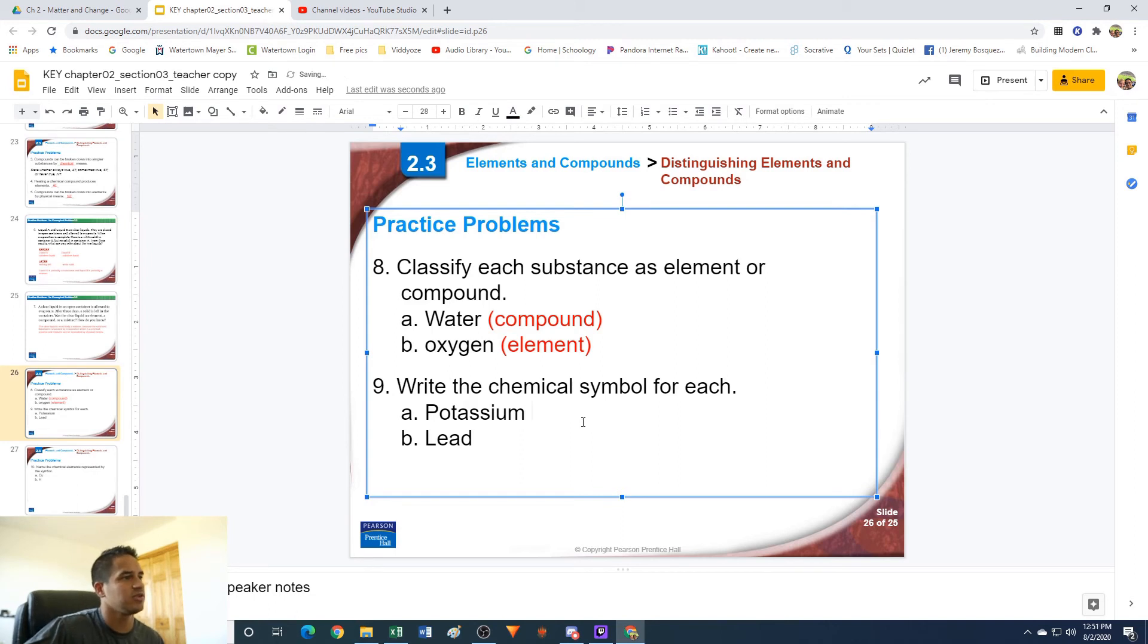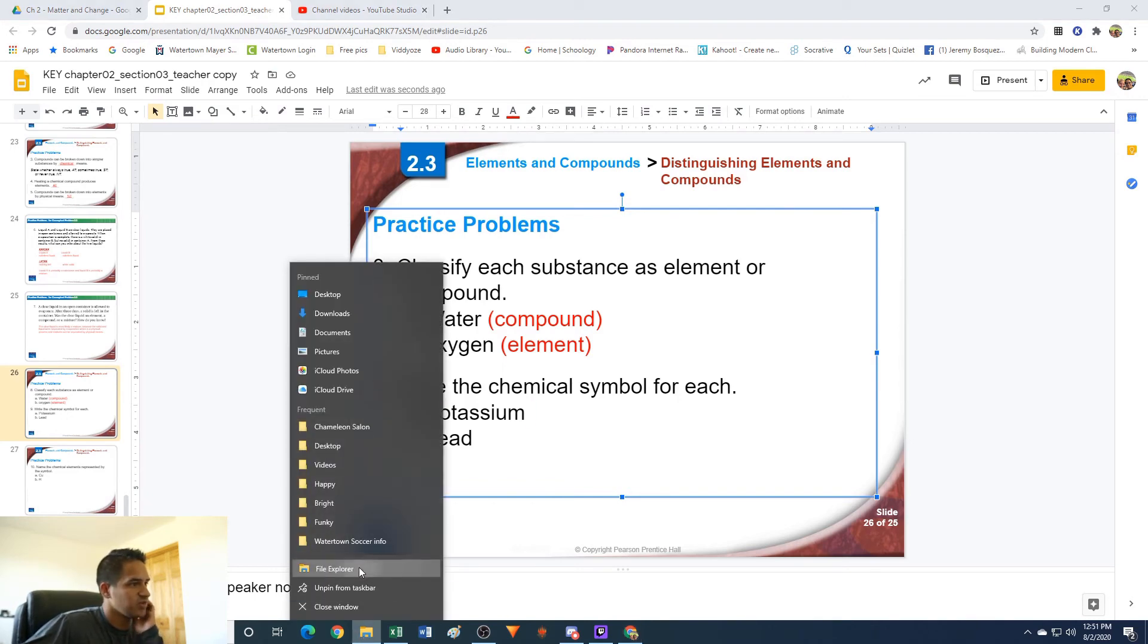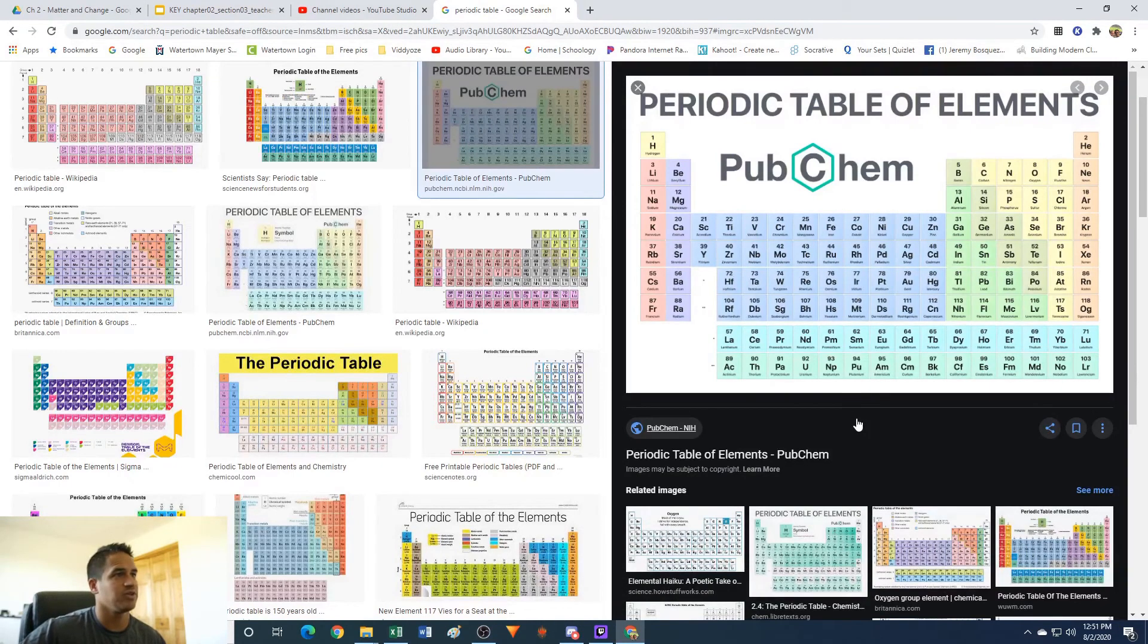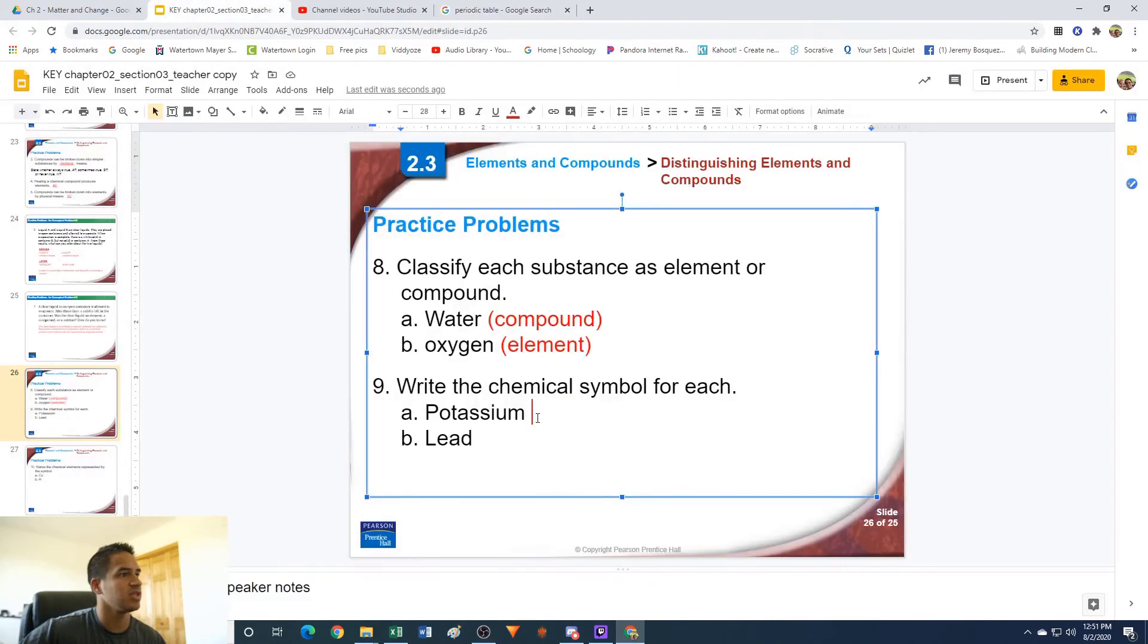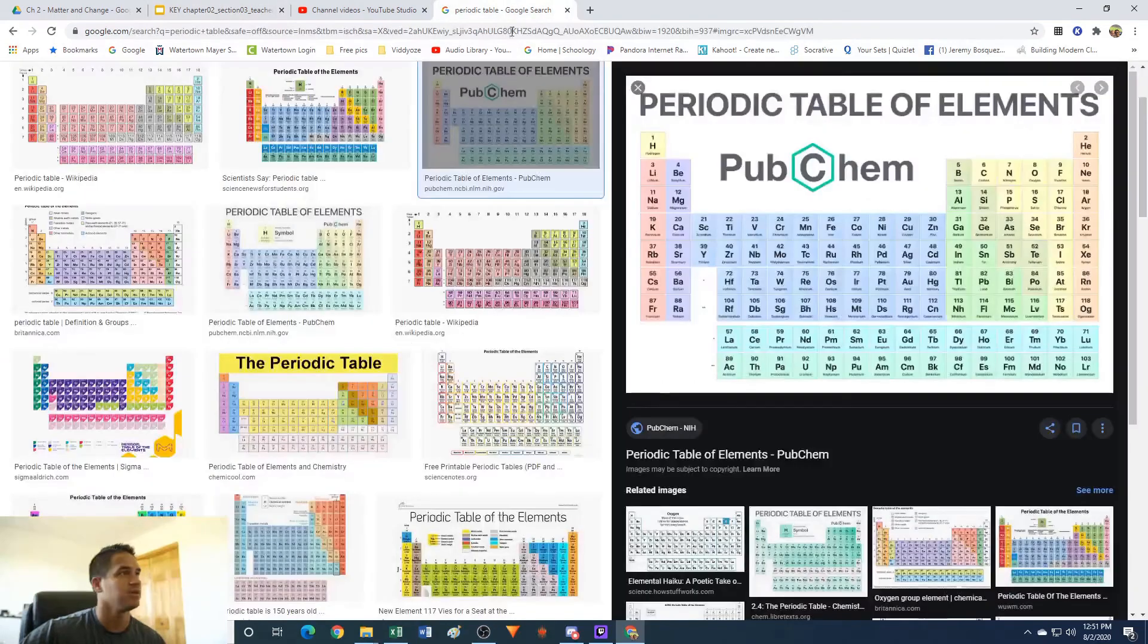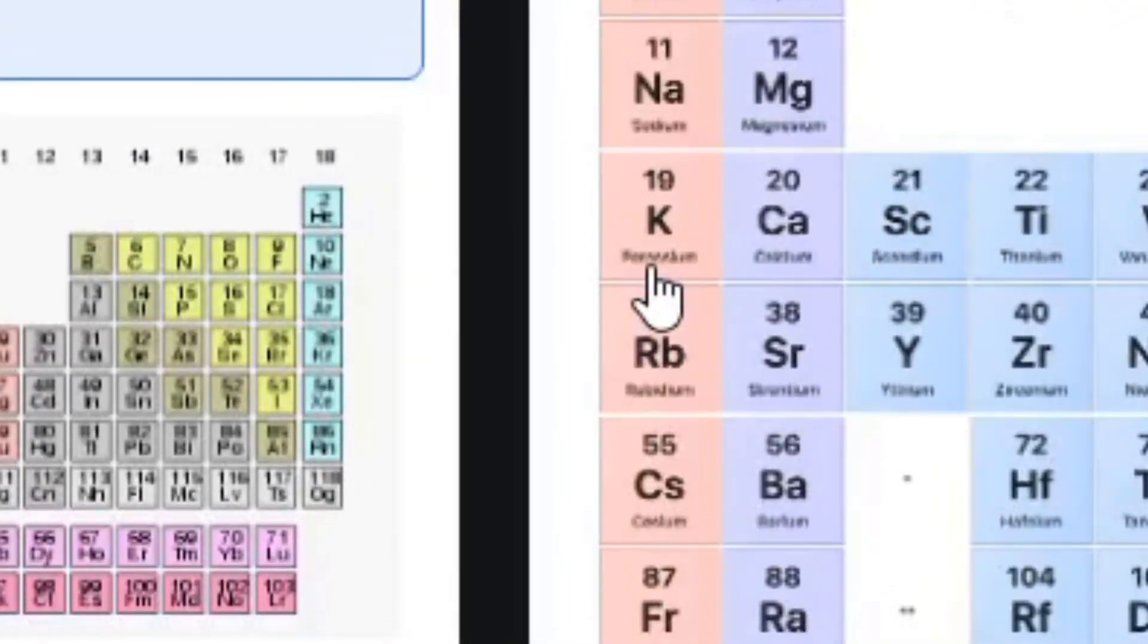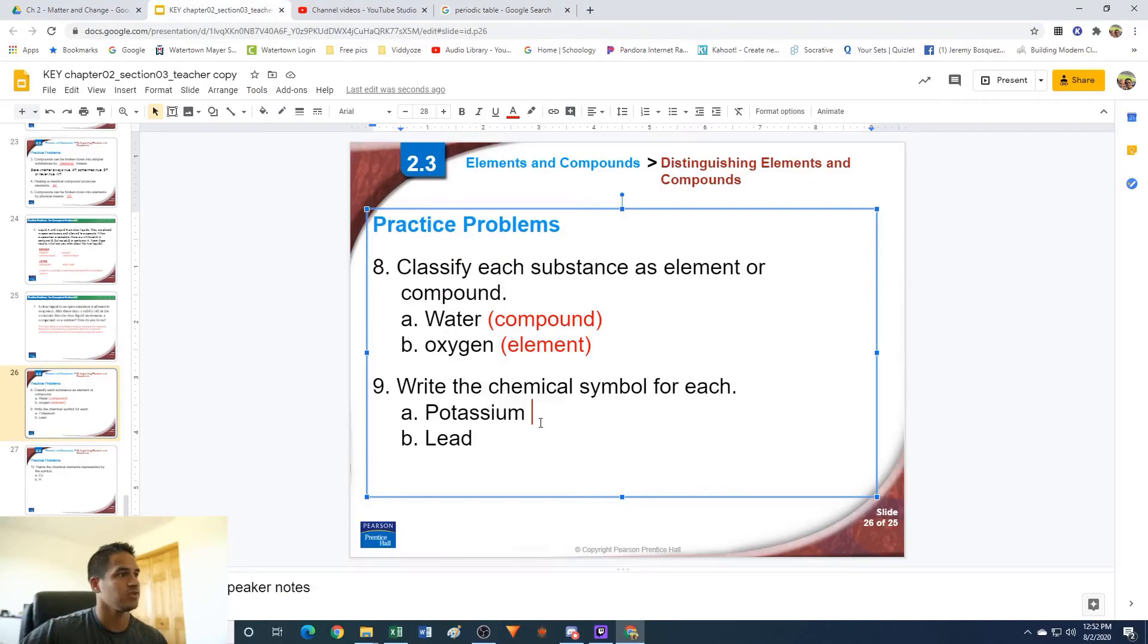Number nine: write the chemical symbol for each—potassium and lead. We're going to want a periodic table for this. Here's our periodic table. I just went to Google, typed in periodic table. The question is asking write the chemical symbol for each. So we have potassium and lead. The chemical symbol for potassium—it might take you some time to find the elements on here—but potassium is here on the left, has a symbol of K. So the symbol is going to be just capital K.